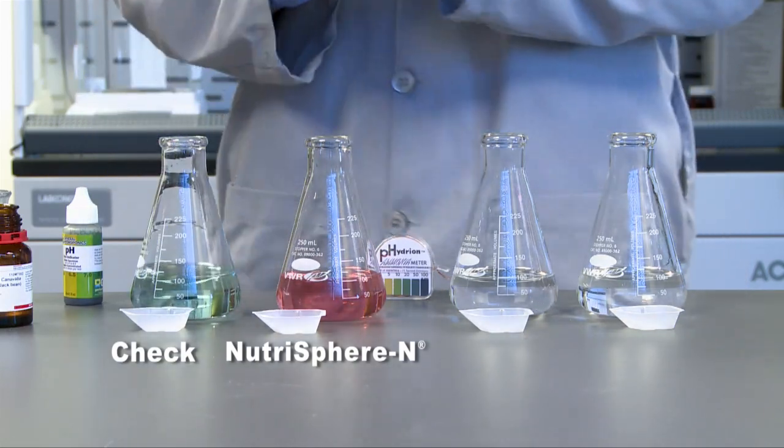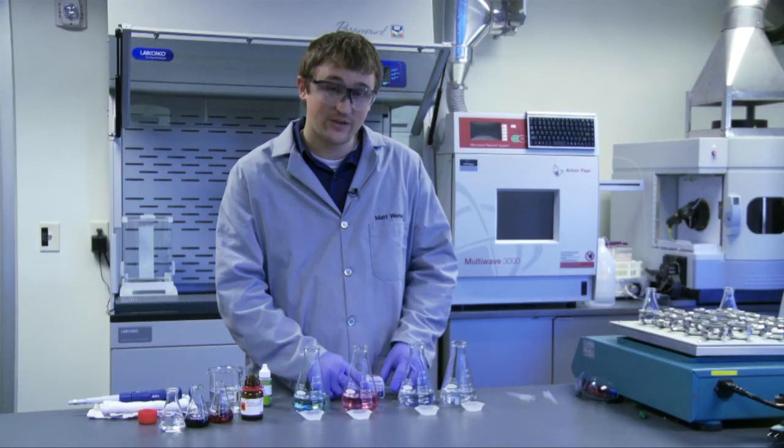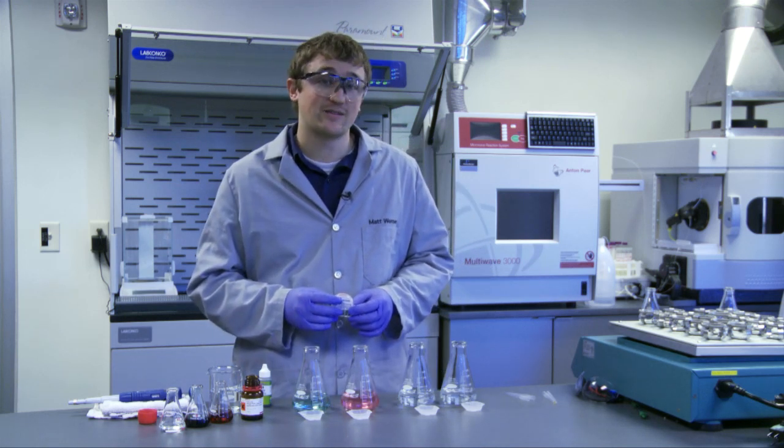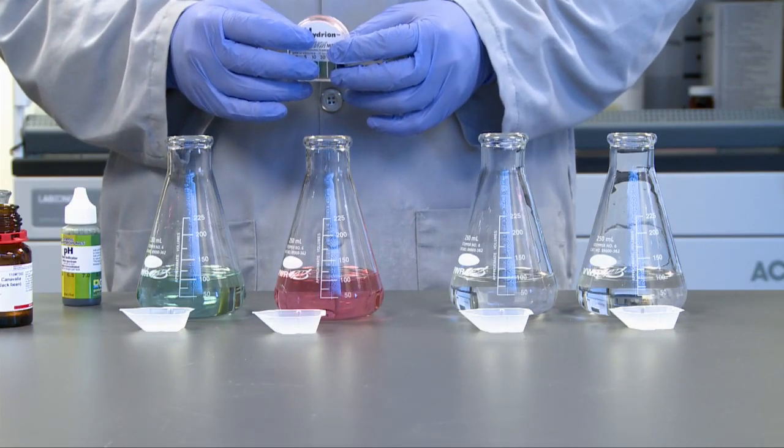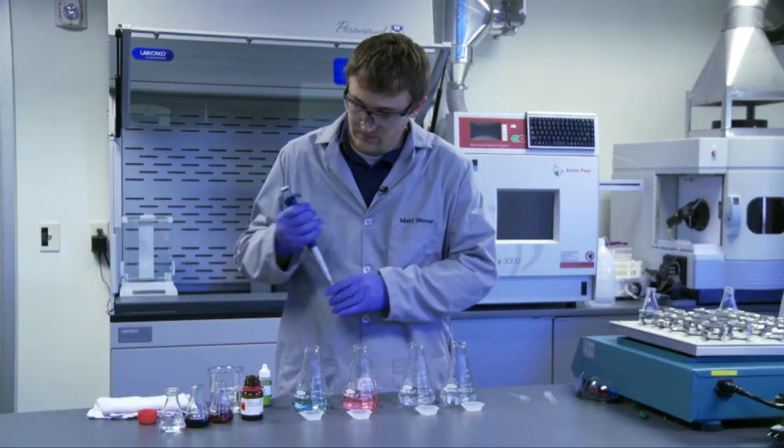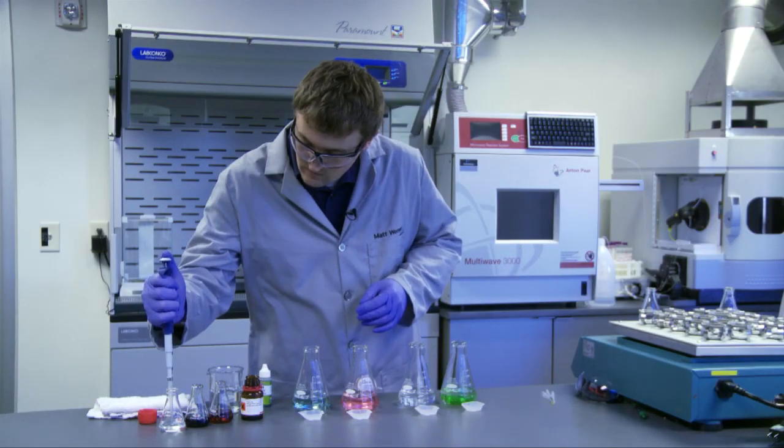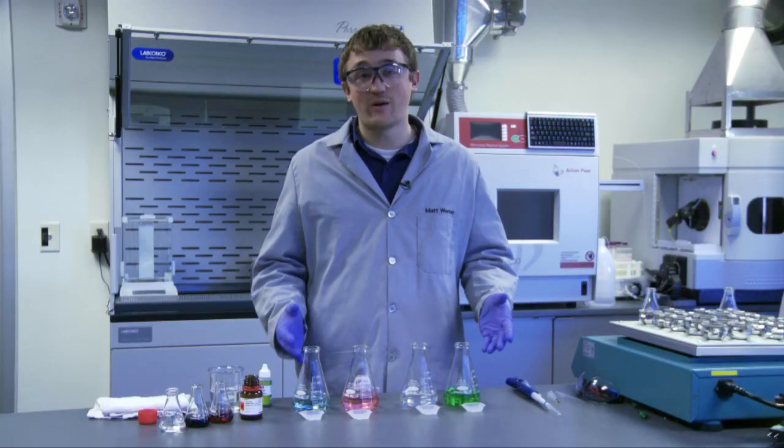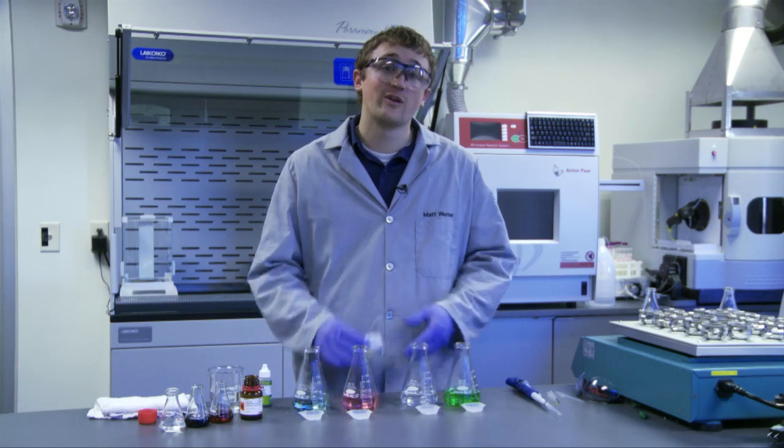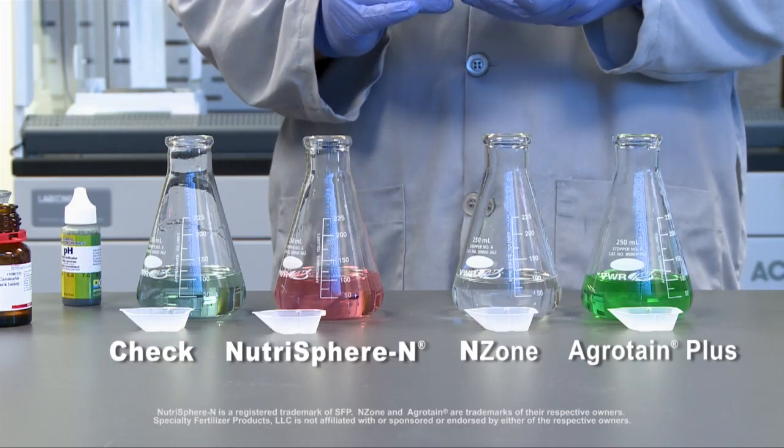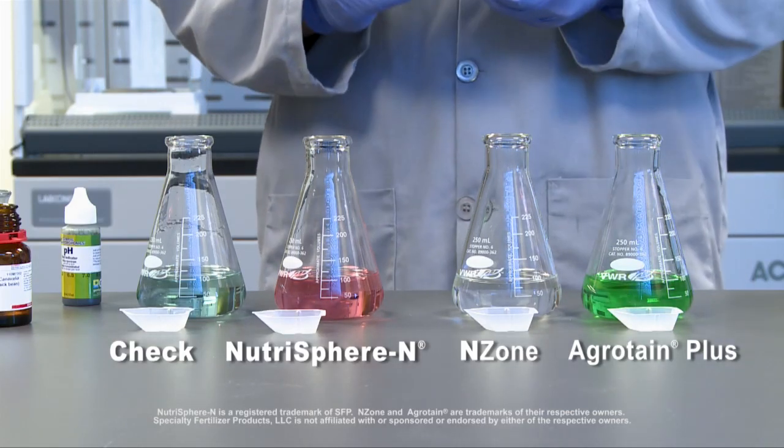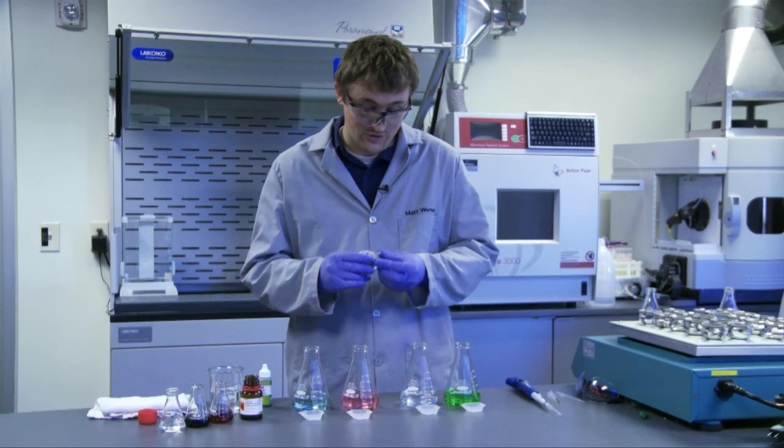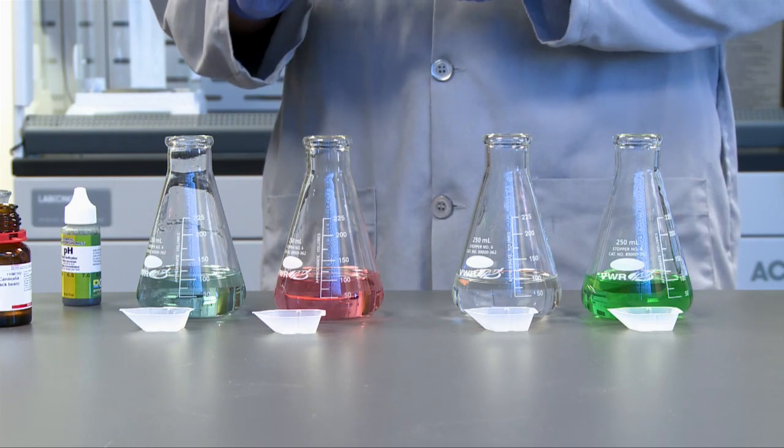These solutions will also produce a gas we will measure with ammonia test strips. By taking readings over the next 24 hours, you will see how NutraSphere N is protecting the nitrogen in addition to other competitive products we have set up. The products I've just added are agrotain and enzo. We're going to do an initial test in four hours and then 24 hours with these ammonia test strips to see how much ammonia is gassing off of each of the solutions.